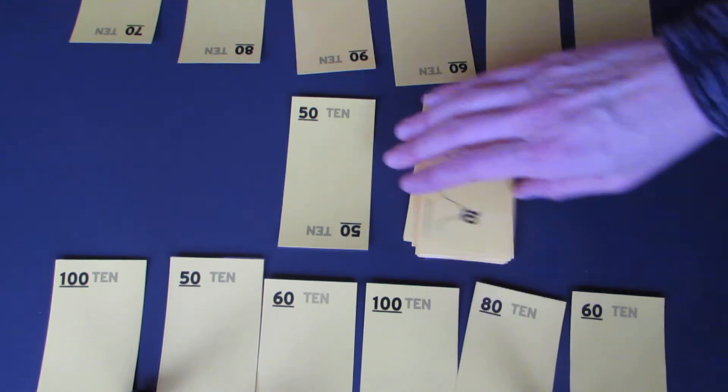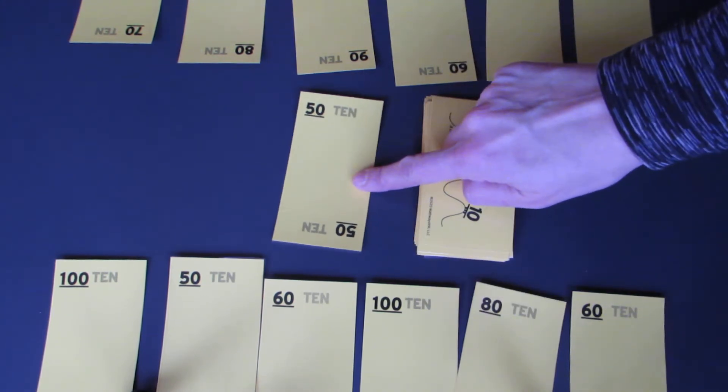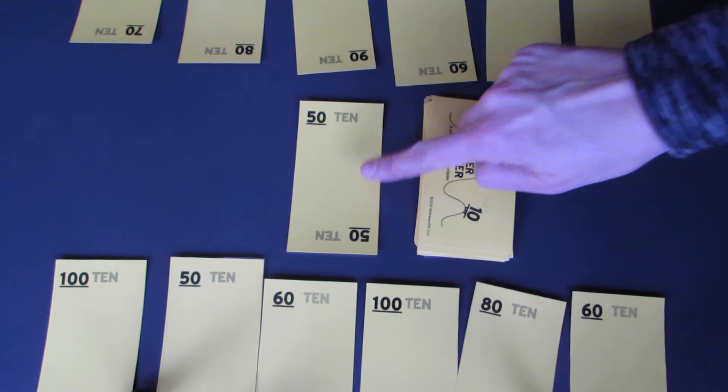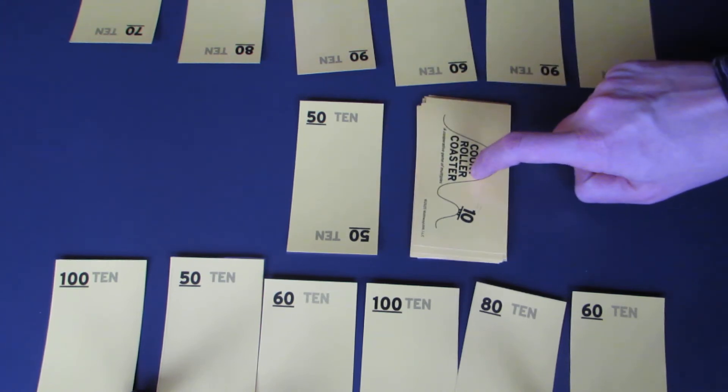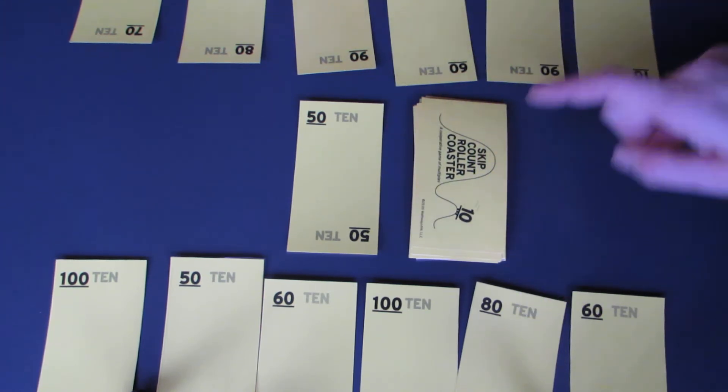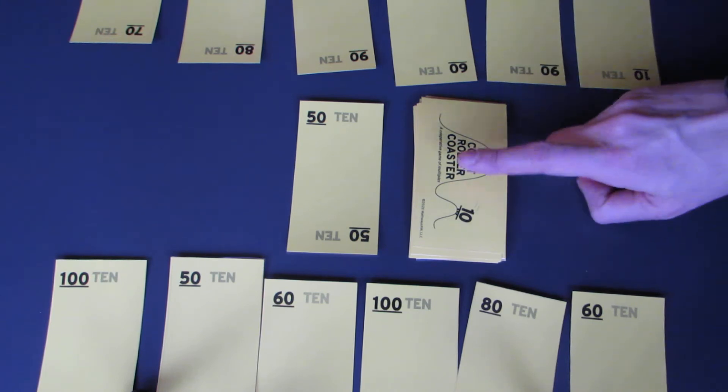We each have six. Here's the deck. And this is our playing card. We're trying to beat the deck. We are not competing with each other. We're working together, cooperatively, to beat the deck.